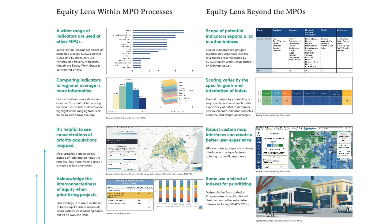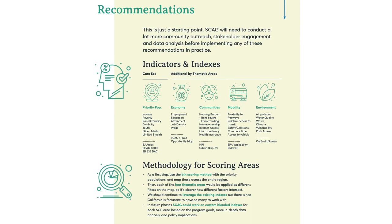Next, we'll move over to the right side of the poster for the recommendations. These are just a preliminary starting point — SCAG will definitely need to do a lot more community and stakeholder engagement before implementing any of these changes. The indicators and indexes section highlights a core set of priority population indicators and additional indicators organized by four thematic areas. My recommendation for the methodology is to use the bin scoring method with the priority population and map that across the entire region, then use the four thematic areas as different filters. SCAG could continue to leverage existing indexes, but in the future they could create their own custom indexes for each of the program areas after more in-depth data analysis.